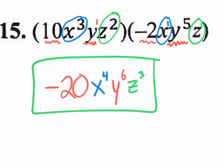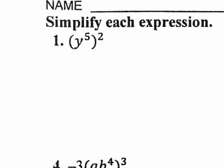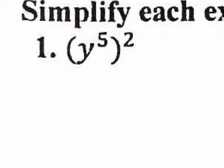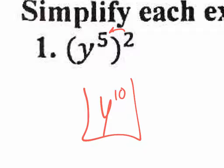Let's move on to the back side — again doing the odd ones. On this side we're dealing more with the power-to-a-power rule, where you have an exponent on the outside. For problem 1: a power to a power — multiply 2 times 5 — the answer is Y to the tenth.